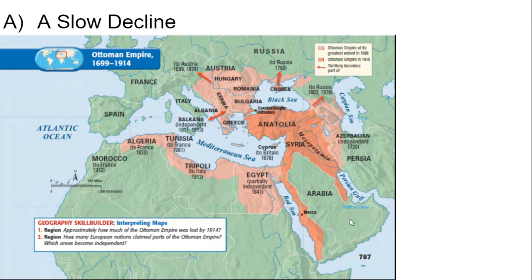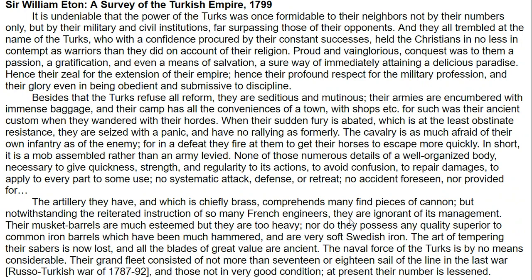The Ottoman Empire at one point had significant European holdings — under Suleiman getting all the way to the gates of Vienna. We're going to see significant pushback by European powers against the Ottoman Empire during this time and a slow and gradual decline until it eventually collapses after World War I. But the Ottomans are not just going to sit by and watch the world pass them by. There's going to be a series of reforming sultans who attempt to make important changes to bring the empire into the modern world.